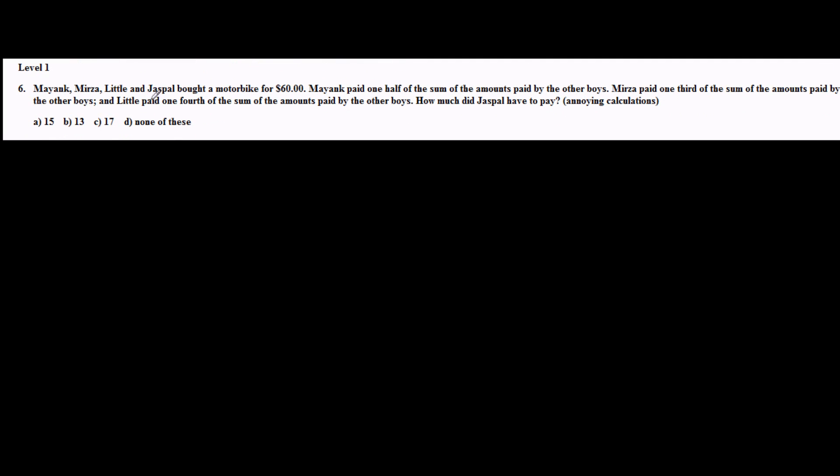Level 1, problem number 6: Mayank, Mirza, Little and Jaspal bought a motorbike for $460. Mayank paid one half of the sum of the amounts paid by other boys. Mirza paid one third of the sum of the amounts paid by other boys, and Little paid one fourth of the sum of the amounts paid by other boys. How much did Jaspal have to pay?